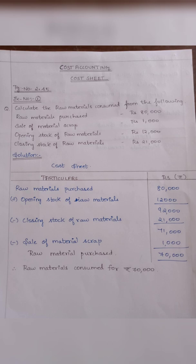Question: calculate the raw materials consumed from the following. Raw materials purchased Rs. 80,000. Sale of materials scrap Rs. 1,000. Opening stock of raw materials Rs. 12,000. Closing stock of raw materials Rs. 21,000.